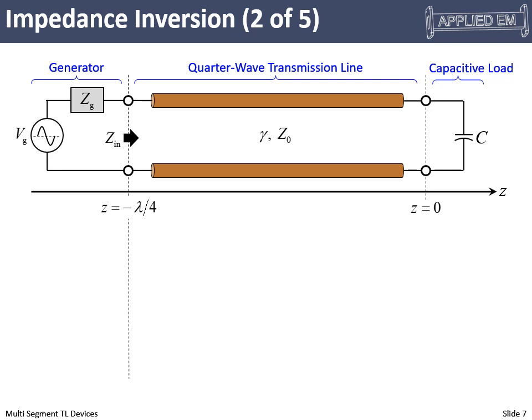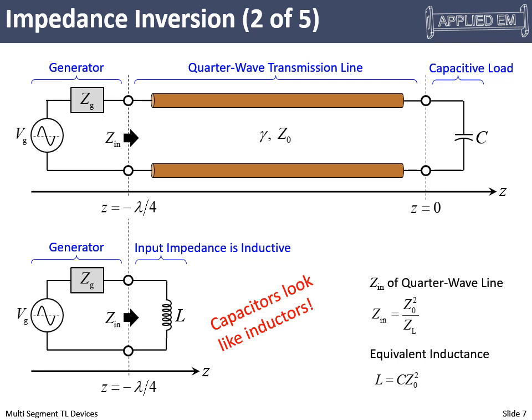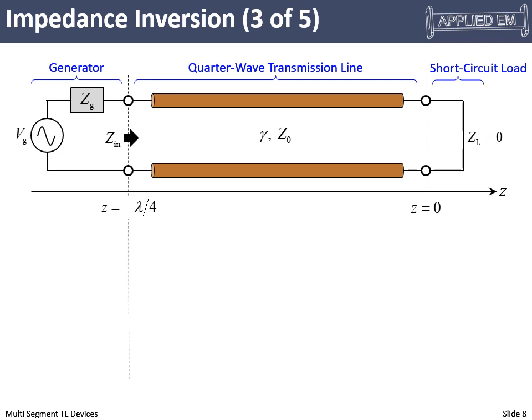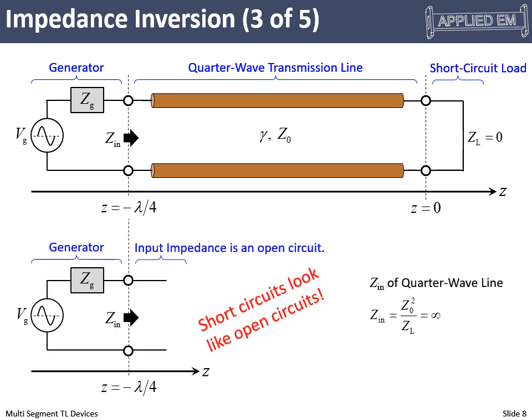What if we're driving a capacitor through this same quarter wavelength of transmission line? Perhaps no surprise, it looks like an inductor, because we're reciprocating the impedance. The effective inductance is C times Z₀². Now, what happens when we drive a short circuit through a quarter wavelength section? The impedance of a short circuit is zero, so Z₀² divided by zero is infinite — it looks like we're driving an open circuit.